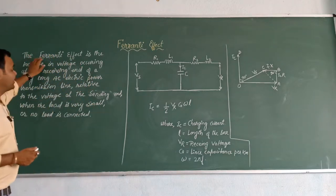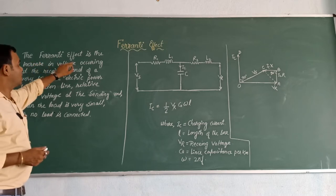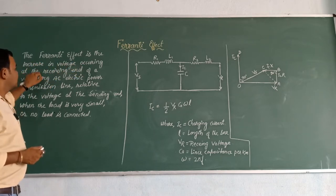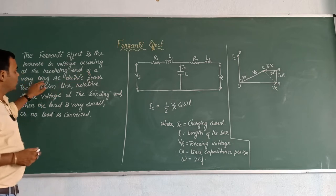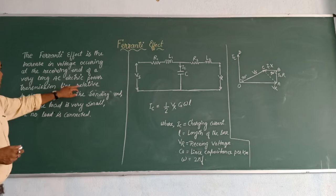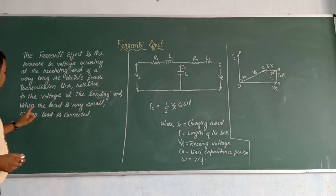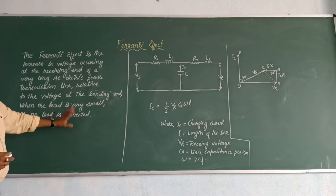The Ferranti effect is the increase in voltage occurring at the receiving end of a very long basic electric power transmission line relative to the voltage at the sending end when the load is very small or no load is connected.